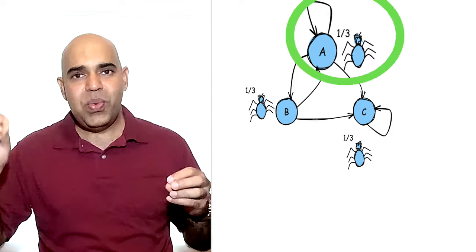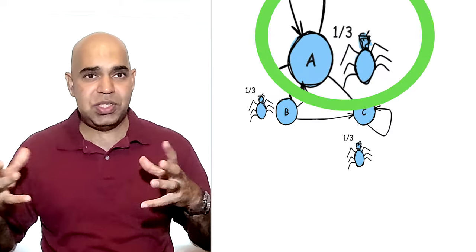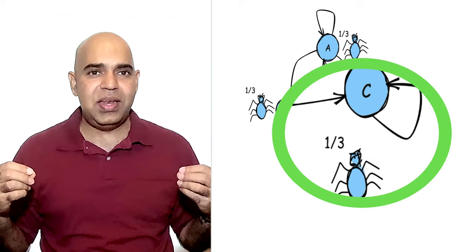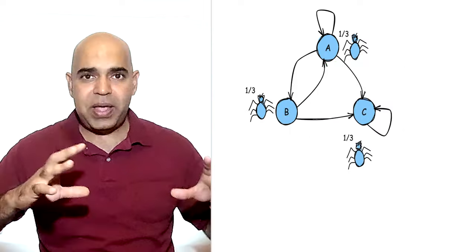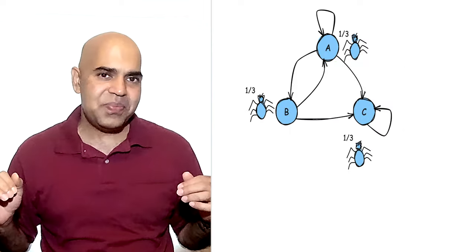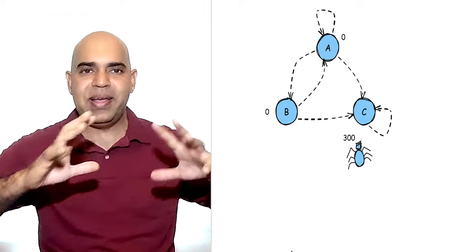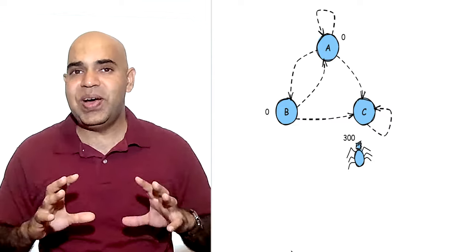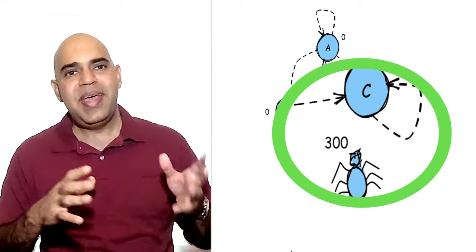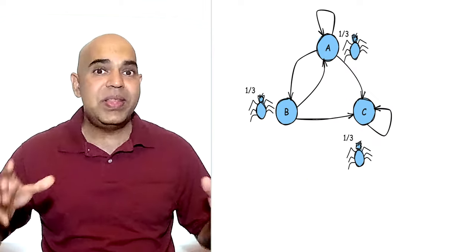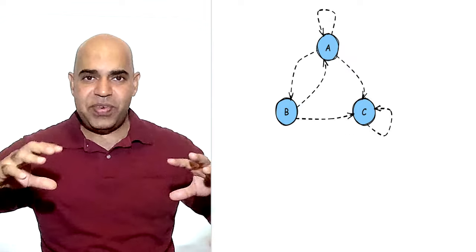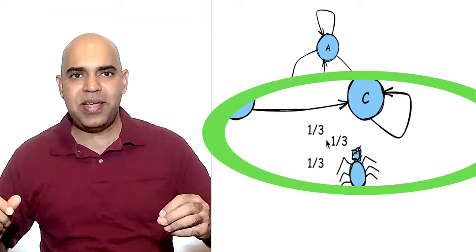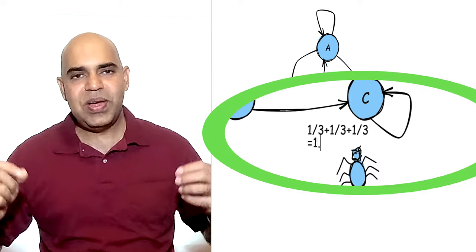But we generally have a total of 1.0 in the page rank algorithm. Out of that 1.0, one third initialization is for node A, one third initialization is for node B, and one third initialization is for node C in the page rank execution at the very beginning. With the example of spiders, we dropped 100 spiders in each node. This is why our total of 300 spiders ended up in node C. With one third spider on each node, after the convergence, node C will have all three one-third values, summing up to 1.0.